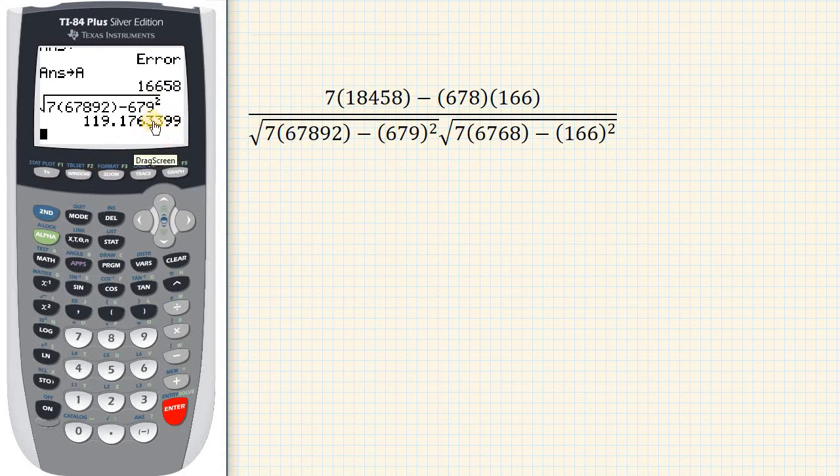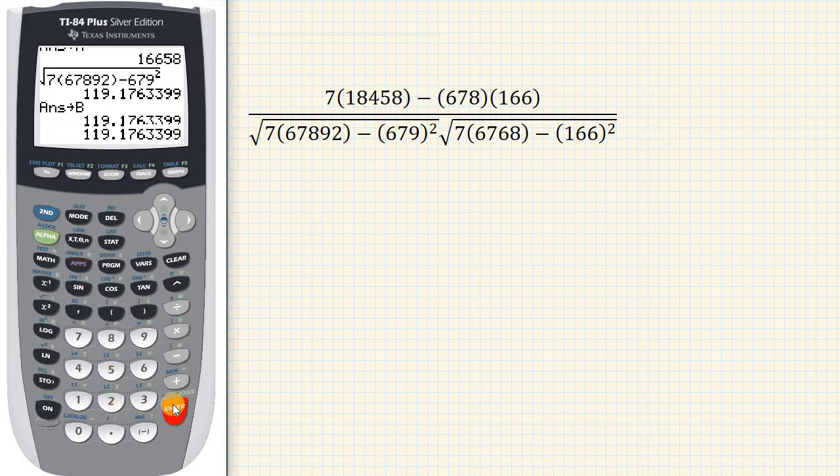Now I want to store this answer in memory slot B. So hit STO. And then I'm going to hit alpha. And see, it defaults to A, but you've got to hit one of the letters. Well, I'm going to store that in memory slot B, so hit B and hit enter. And so that number is stored in memory slot B.